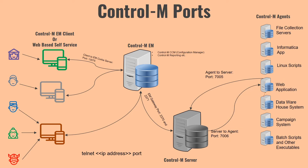Control-M Agent can also initiate a connection back to Control-M Server, and in that case it uses port 7005. So both sides can initiate a connection: Control-M Server initiates a request to Control-M Agent on port 7006, while Control-M Agent initiates a request to Control-M Server on port 7005. You need to make sure port 7005 is open from the agent server to the Control-M Server.